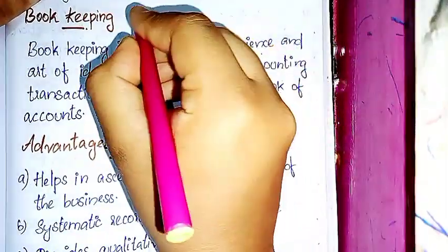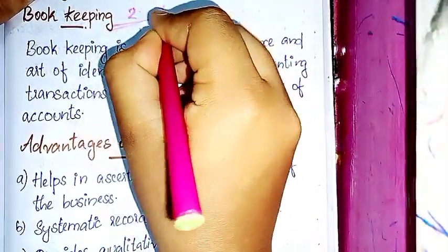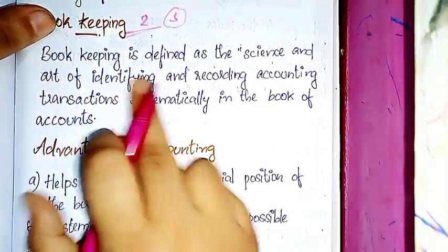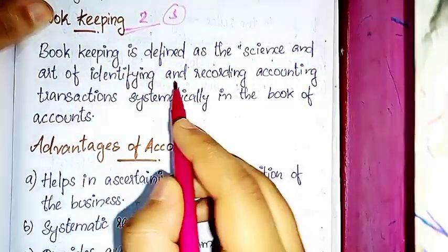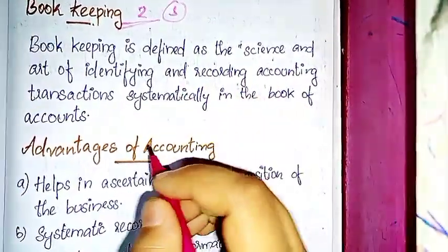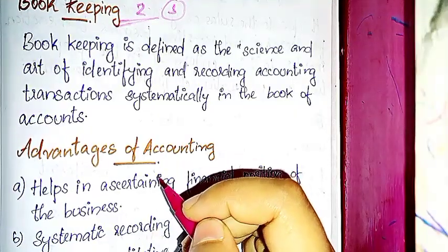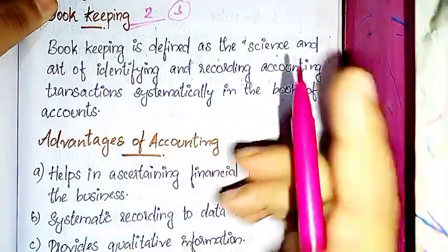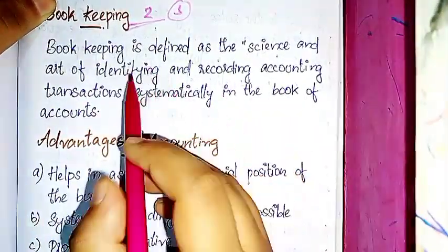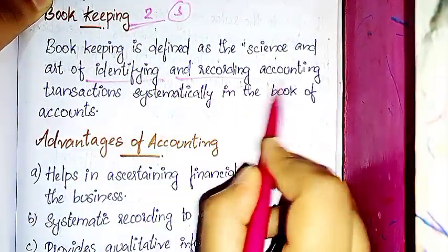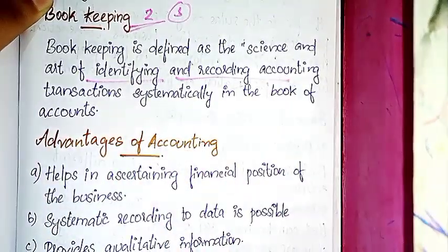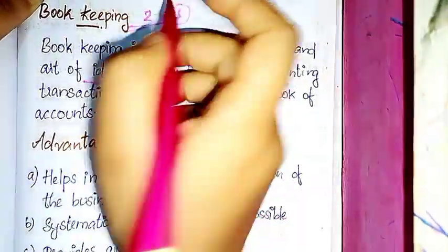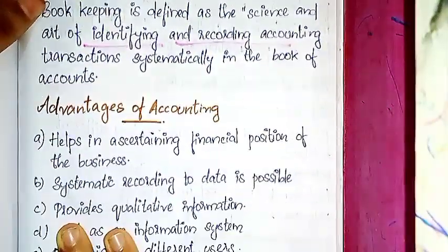Next is bookkeeping. Bookkeeping is defined as the science and art of identifying and recording accounting transactions systematically in the books of account. You can identify all accounting transactions correctly and record them — that is what bookkeeping is.